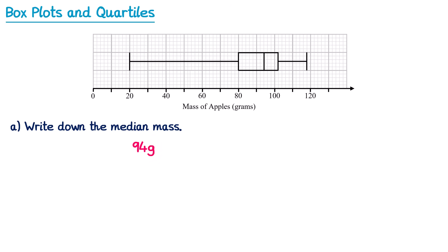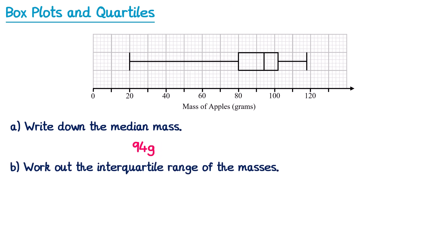You could also be asked about the quartiles, or even asked to work out the interquartile range. Remember the interquartile range is the upper quartile subtract the lower quartile. You can see the upper and lower quartiles because they're the ends of the box. The upper quartile is this value here, and the lower quartile is this value here. Extending those lines down: the upper quartile is 102, and the lower quartile is 80. So we do 102 take away 80, which is 22g.